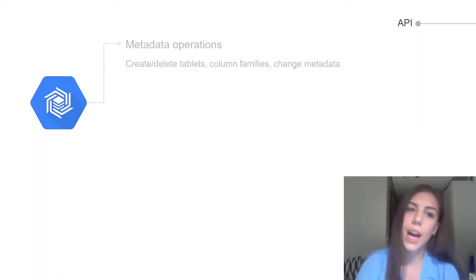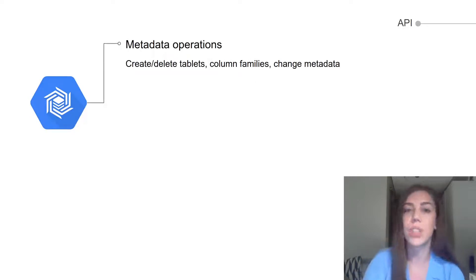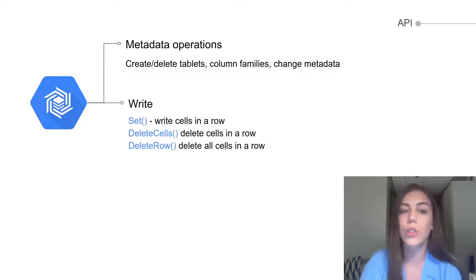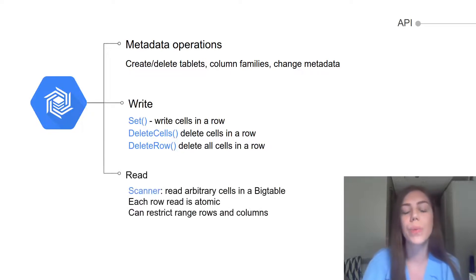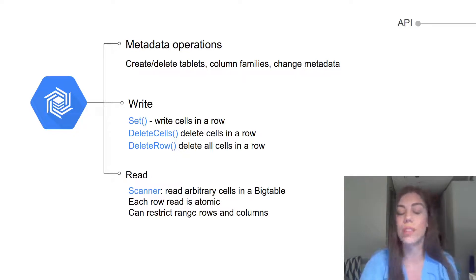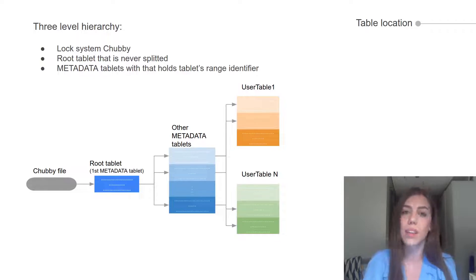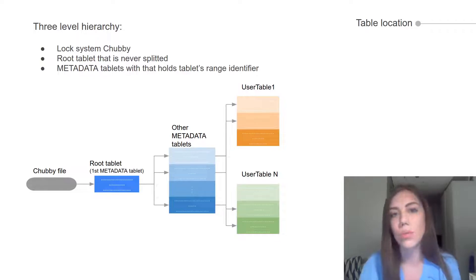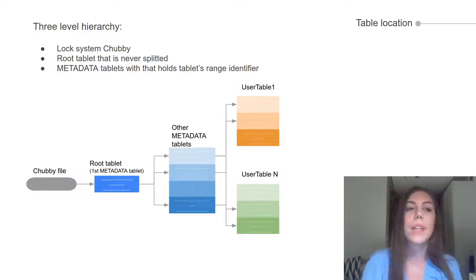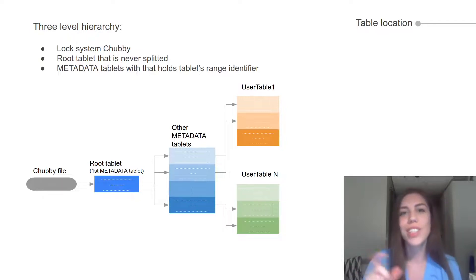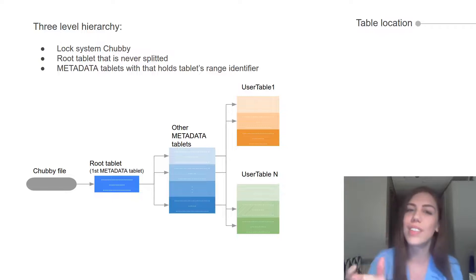Regarding the Bigtable API, there are metadata operations for metadata changes, write operations such as set and delete, and read operations like the scanner that allows clients to retrieve a range of rows and columns. Tablets in Bigtable are assigned to one server, and a server manages thousands of tablets. It is possible for tablets to change server, and in this way no data is copied — only a pointer is moved around.